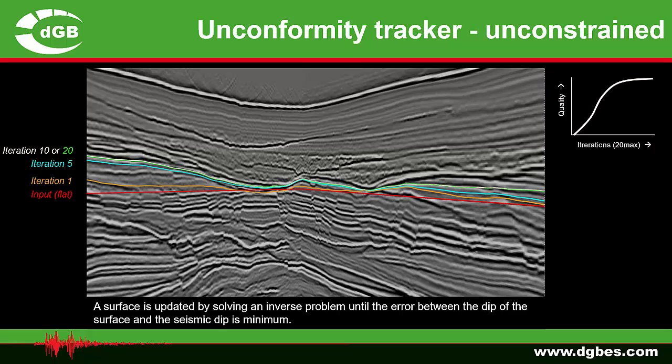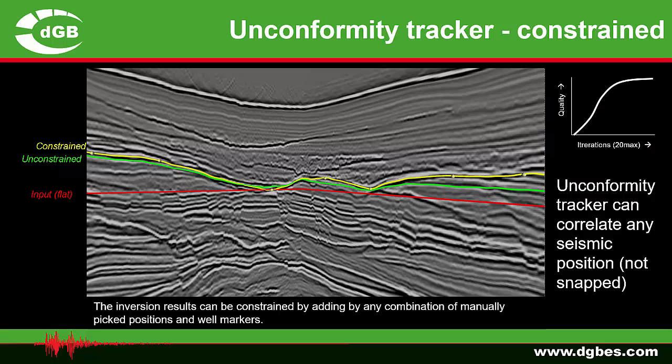After 10–20 iterations you will have reached the best solution and found your horizon. The tracking can be unconstrained, only minimizing the error, but you can also force the solution to go through your own interpretation — manually picked points or well markers — and the software will follow the dip in between markers, honoring them exactly. The main advantage over a normal auto tracker is that you can track anything: unconformities, seismic events, basically anything that can be correlated in the seismic.